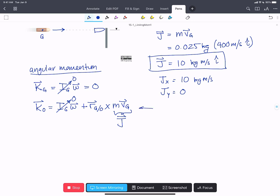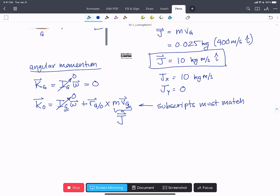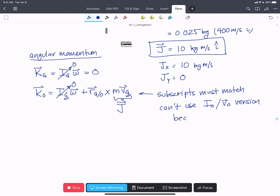Now there are two things to note here. One, the subscripts must match within this equation. And the other thing we note is we can't use the IO VO version of this equation, because there's no physical meaning to VO.